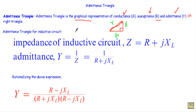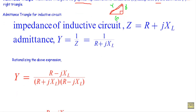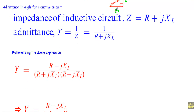Now let me show you the admittance triangle of an inductive circuit. The impedance of an inductive RL series circuit is given by Z = R + jXL. To find the admittance, we take the reciprocal of this impedance: Y = 1/Z = 1 divided by (R + jXL).